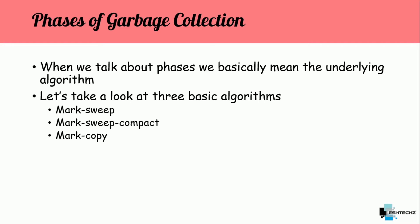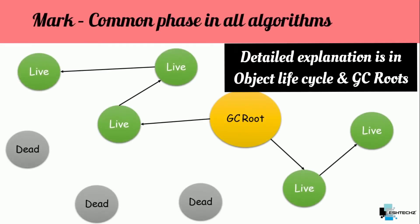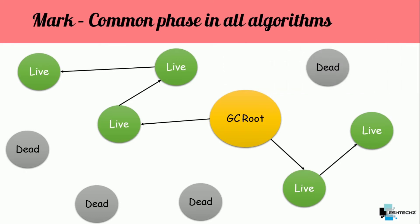We have covered marking in our previous tutorial, so let's quickly recap. In this picture, the yellow circle is the GC root, which is our starting point. From here we start marking the live objects. Those objects which are not reachable are marked as dead, and these are the ones which will get collected. So this is the marking phase.